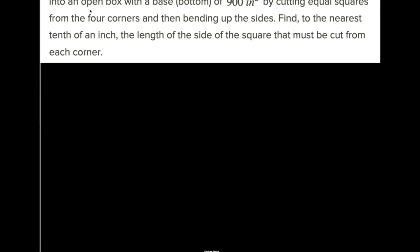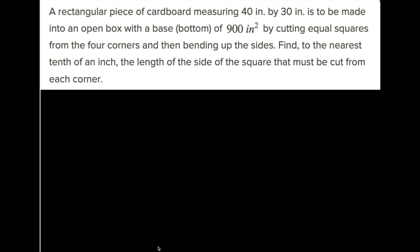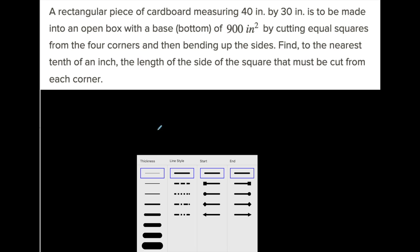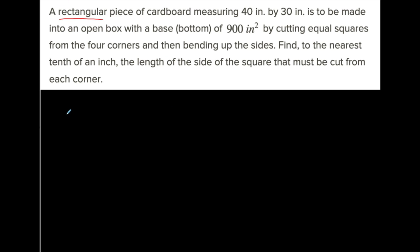We're going to do another application of quadratics. A rectangular piece of cardboard measuring 40 inches by 30 inches is to be made into an open box with a base of 900 square inches by cutting equal squares from the four corners and then bending up the sides.